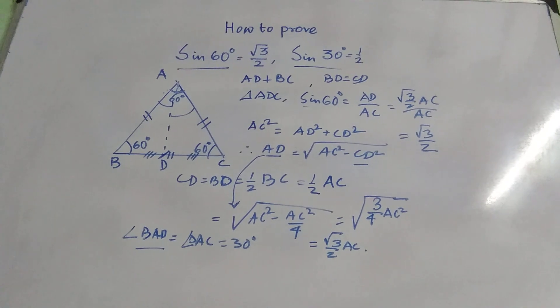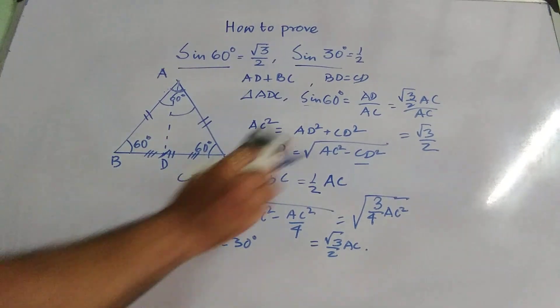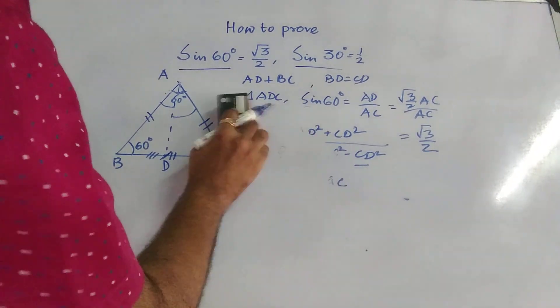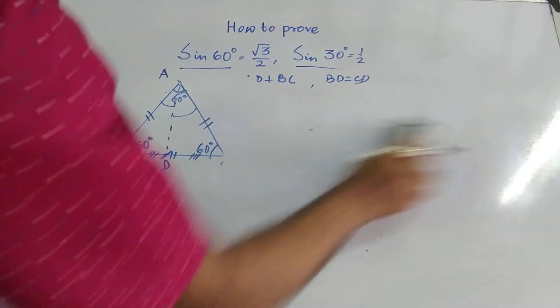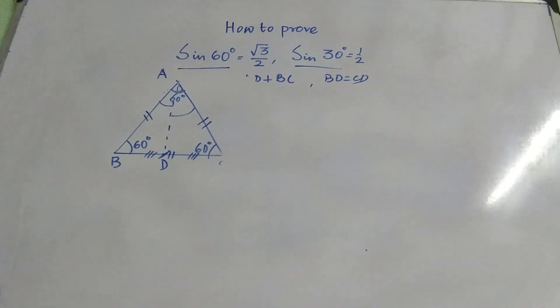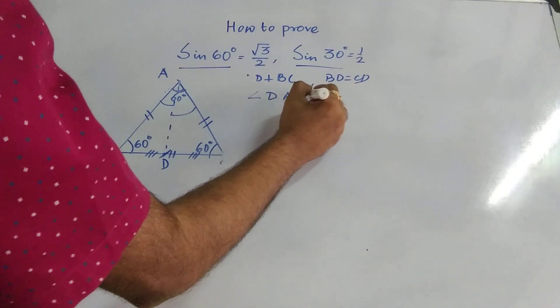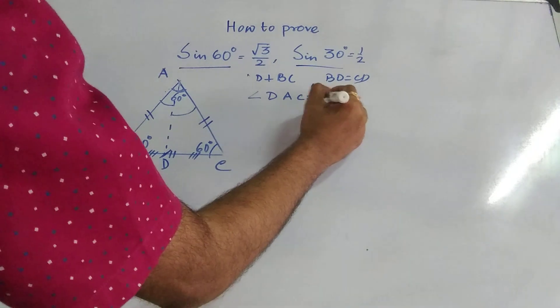So if we consider that also, so now we have already derived sin 60 equal to root 3 by 2. So I am removing this section and let us find it out, how we can find out sin 30.